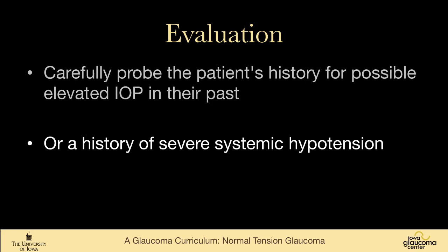Some people with normal tension glaucoma have a history of severe systemic hypotension — ruptured aortic aneurysm, severe automobile accident where they were in a coma or ICU for a long stretch of time and perhaps did not have adequate perfusion. In a study that Dr. Drance did in Vancouver, he found that people with normal tension glaucoma were more likely to have had some catastrophic medical issue that might have left them hypotensive for a long period of time. Most of my patients with normal tension glaucoma do not have that kind of history.